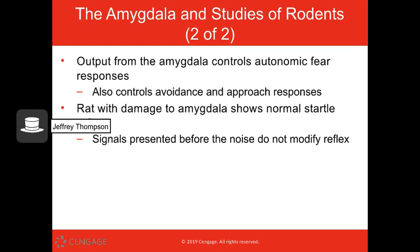Things leaving the amygdala control our fear responses — do we avoid, or do we approach? When you see a rat with damage to the amygdala, you get a normal startle reflex, but any signals presented before the noise don't actually modify the reflex. The startle reflex is still there, but it's not affected by other things in the environment.